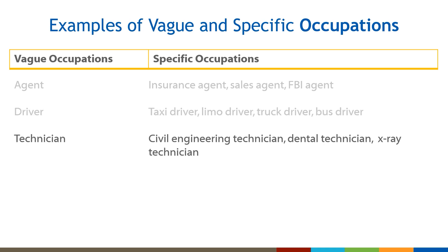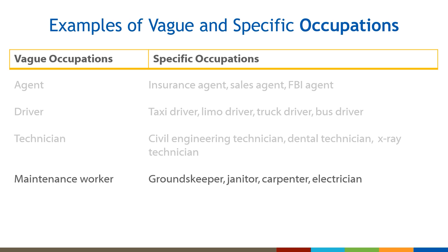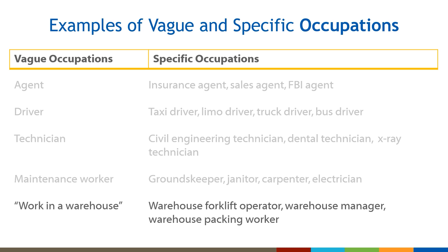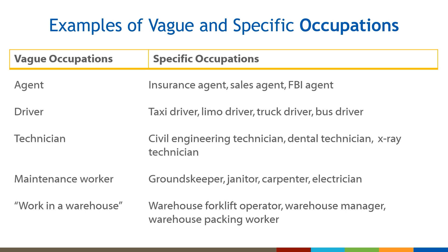For 'technician,' a more detailed response would be a civil engineering technician, dental technician, or x-ray technician. If someone says they're a maintenance worker, ask what kind of maintenance work they do and offer examples such as groundskeeper, janitor, carpenter, or electrician. If they say they work in a warehouse or shipping department, you might use prompts to learn that they are a warehouse forklift operator, a warehouse manager, or a warehouse packing worker. Remember, it's important to get the most specific response you can.